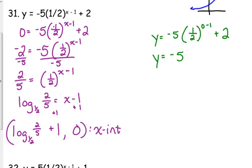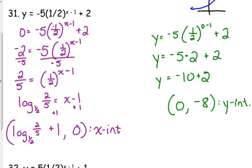Anyways, 1 half to the 0 minus 1. 0 minus 1 is negative 1. The negative 1 half power flips things over. So that's negative 5 times 2 plus 2. And that is negative 10 plus 2 which is negative 8. So 0, negative 8 is our y-intercept for number 31.